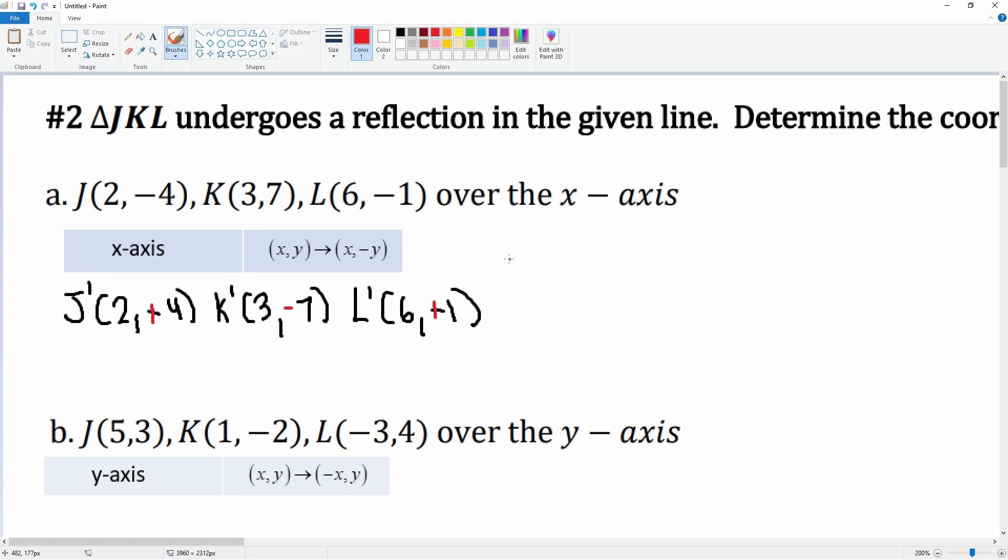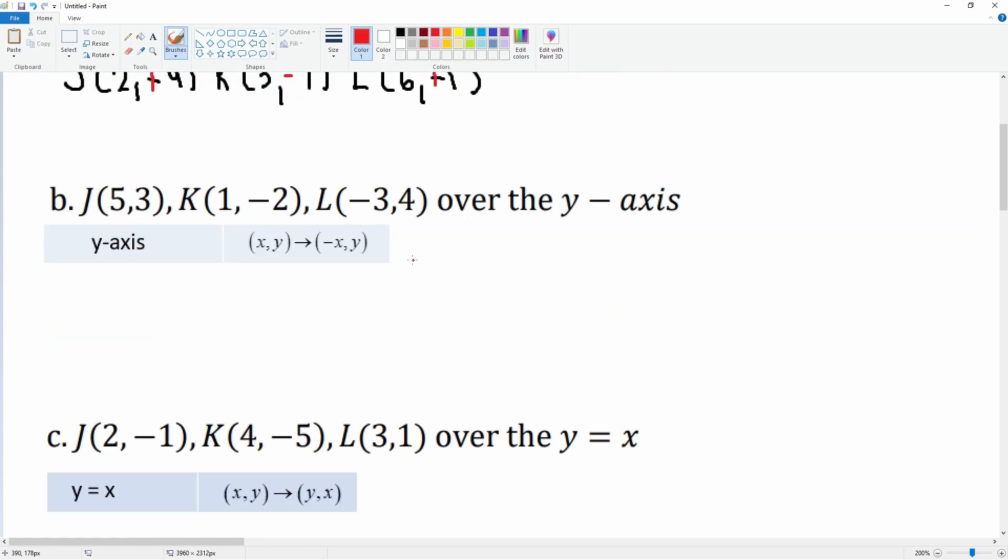So J prime, it is 5 comma 3, but now there is a negative in front of the 5. K prime: 1 comma negative 2, but now there is a negative in front of that 1. Then we have L prime which is negative 3 comma 4, and now that negative 3 becomes a positive 3.